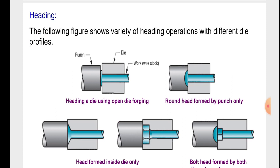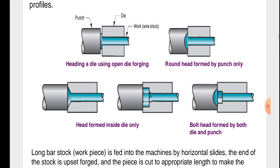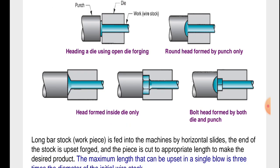Heading. The following figure shows a variety of heading operations with different die profiles. The figure shows the punch, die, and workpiece (wire stock). Types include: heading using open die forging for a round head; round head performed by punch only; head formed inside the die only; and bolt head formed by both die and punch.